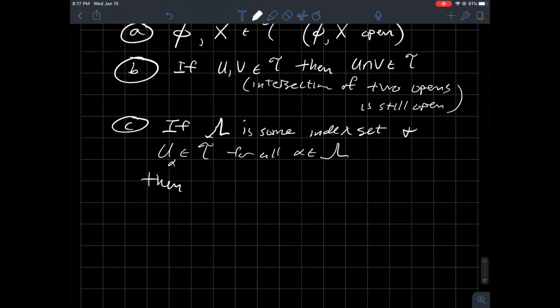and that should still land in T. So then I'll write it this way. The union over all, say, alpha and lambda of U alpha, the union of all those should also be an element of our collection of subsets. So in other words, i.e. union, maybe also to emphasize this, any union. Let's try to emphasize that a little bit better. Any union of opens is open.